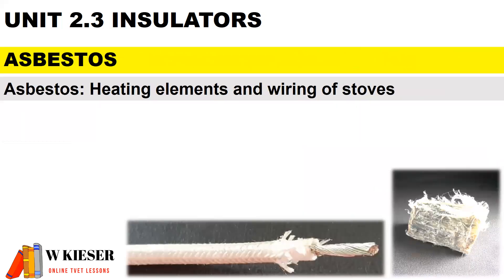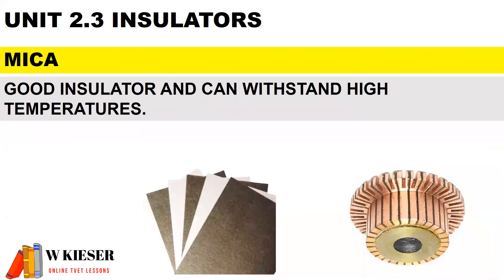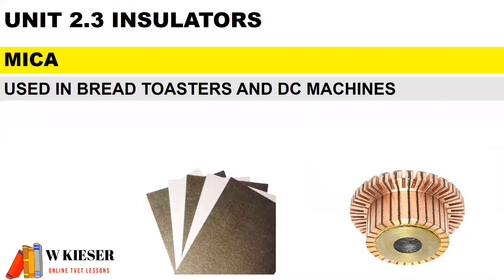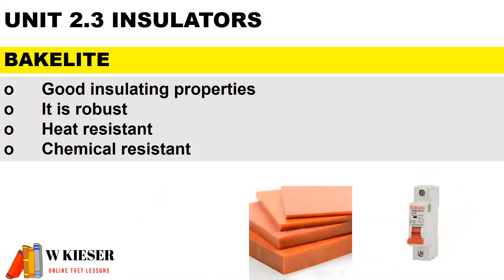For asbestos, it is used in heating elements and wiring of stoves. Mica is a good insulator and can withstand high temperatures. It is used in toasters and for insulating the segments of commutators in DC machines.